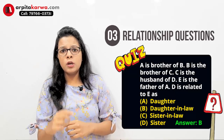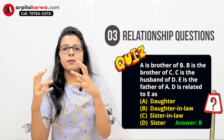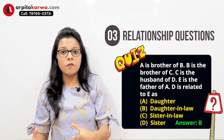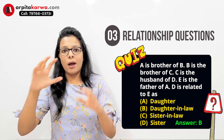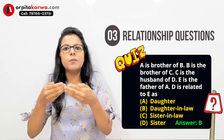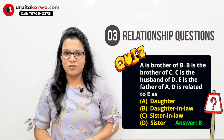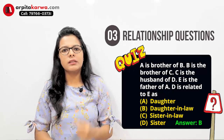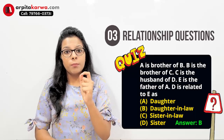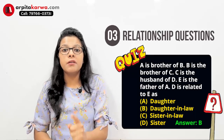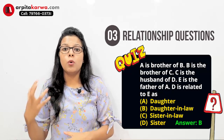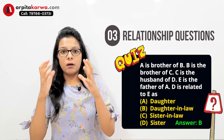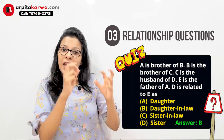The best way to solve relationship questions is by making diagrams, because when you make diagrams you get a clear picture and it becomes easy to answer the question. Making a diagram takes only about 20 seconds, but those 20 seconds will save you from errors. So never skip the process of making diagrams. Never jump to an answer — always make a diagram and then attempt the question.